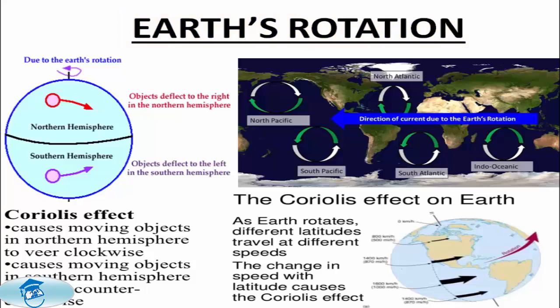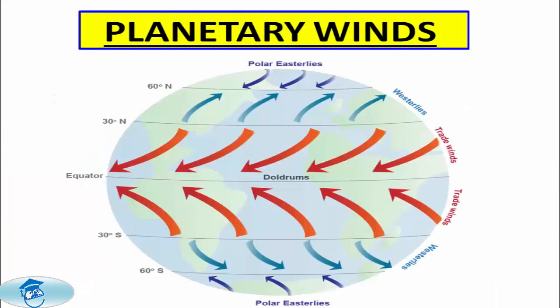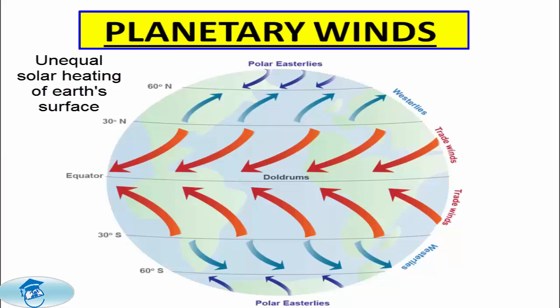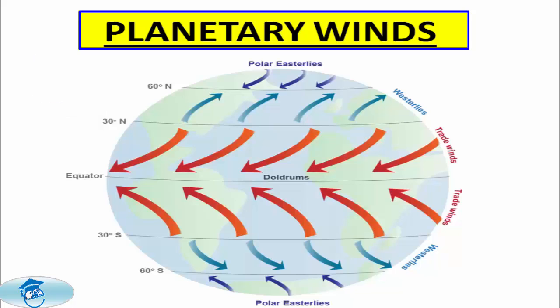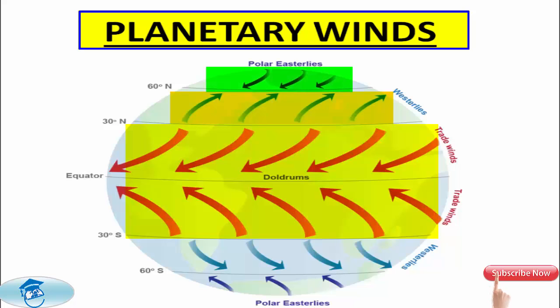The fourth factor is planetary winds. Planetary winds are caused due to greater heating of Earth's surface near the equator compared to solar heating near the North and South Poles. The planetary winds play a dominant role in the flow of ocean currents and are categorized as trade winds, westerlies, and polar easterlies, which blow both in the Northern and the Southern Hemispheres.